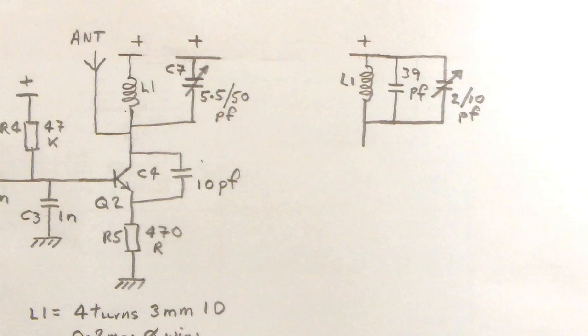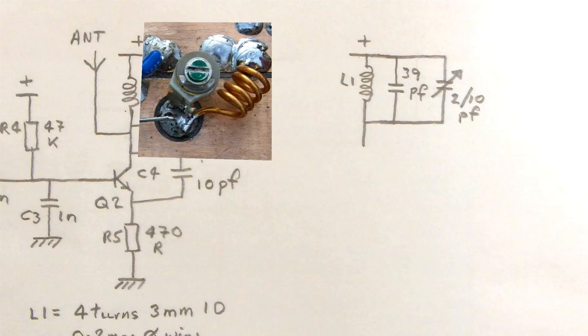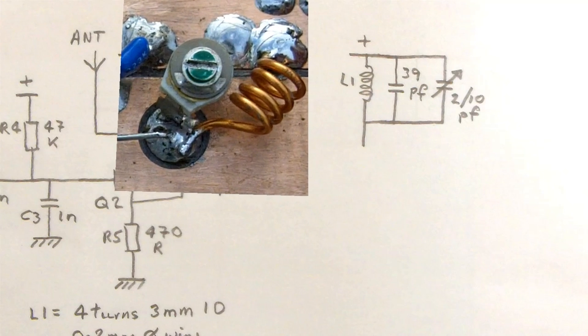They had L1 with 5 turns and then they had a 39 pF fixed capacitor and a 2 to 10 pF variable capacitor. That's a very good arrangement and if I'd have got the components, I would have used them. But I've achieved a very similar thing by ensuring that I have most of my C7 engaged.